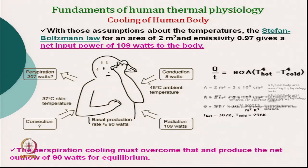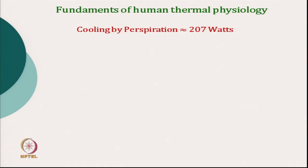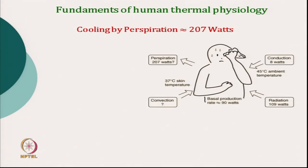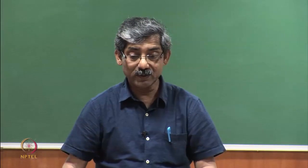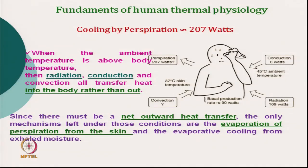After radiative heat, the main activity is cooling by perspiration. In the earlier case at room temperature of 23 degree Celsius, insensible perspiration is around 600 grams per day. But when temperature becomes 45 degree Celsius, people will start sweating. In that case, total fluid or moisture transmission will be approximately 7.5 liters per day. When ambient temperature is above body temperature, radiation, conduction, and convection all three mechanisms transfer heat to our body.